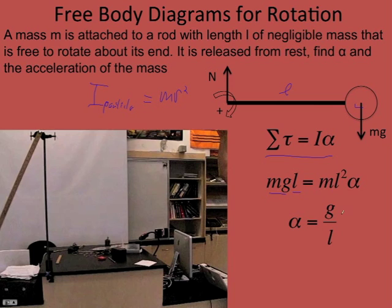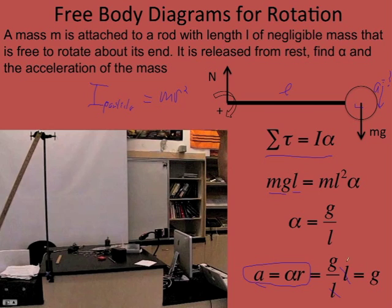Solving for alpha, it's g over L. And what was the linear acceleration of the end right as I let go? Well, a equals alpha·r — that's a very important equation that's going to come up over and over. The end has r equals L, so we just get the acceleration as g. Nothing really different here; it's almost the same as just dropping something. The key thing, though, is this acceleration will not stay the same — it's going to change as the rod rotates.